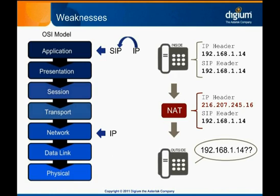All of the address translation in NAT works well at the IP layer, but SIP also uses IP addresses, and there is not a good way to build robust address translation into SIP. So when a SIP device inside a NAT tries to talk to an external SIP device, the external device will see untranslated IP addresses in the SIP headers and be unable to respond appropriately.